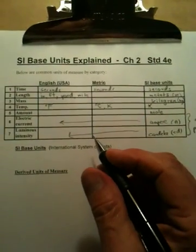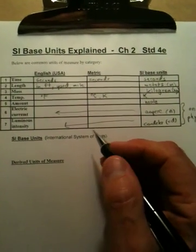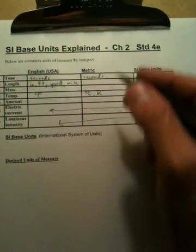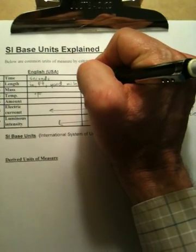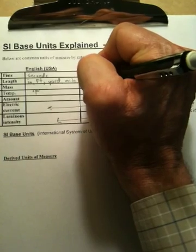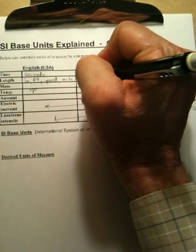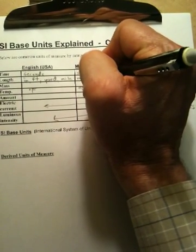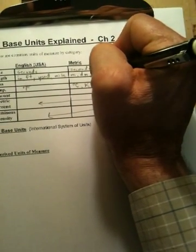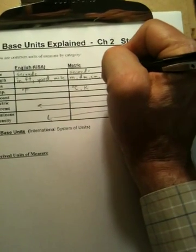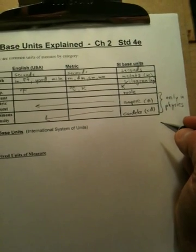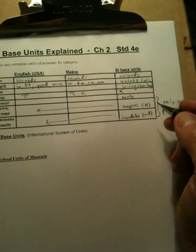The metric system is much handier, and in science it's exceptionally useful. Calculations are tough enough without doing conversions in the English system. In metric, we use meters, decimeters — which is one-tenth of a meter — centimeters, which is one one-hundredth of a meter, and millimeters, which are one one-thousandth of a meter.